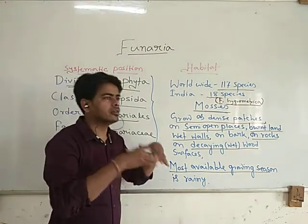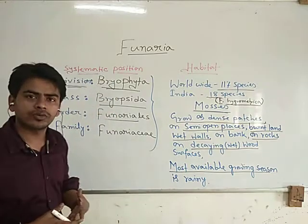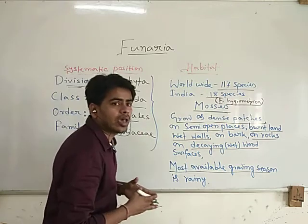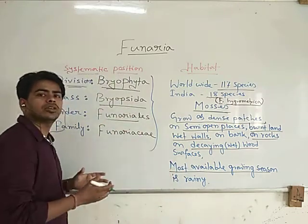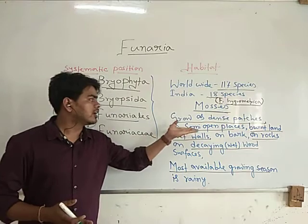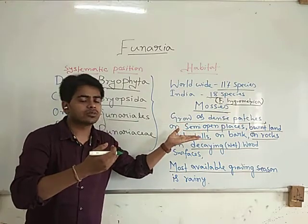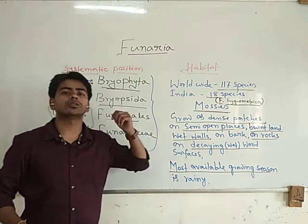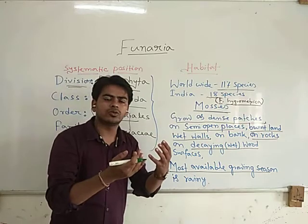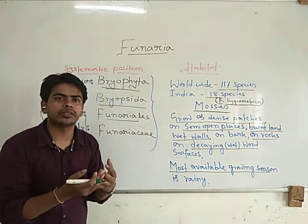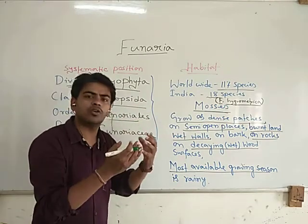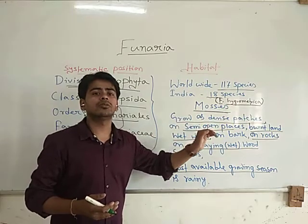If we are talking about general habitat, generally where are they growing? There are many available places. They grow as dense patches. Generally, they grow either in open surfaces but most commonly in semi-open places, where the surface is almost three sides coated or covered. There are surfaces where light can come from one side, or opening from one side. In this way, there are more surfaces available for their growth.